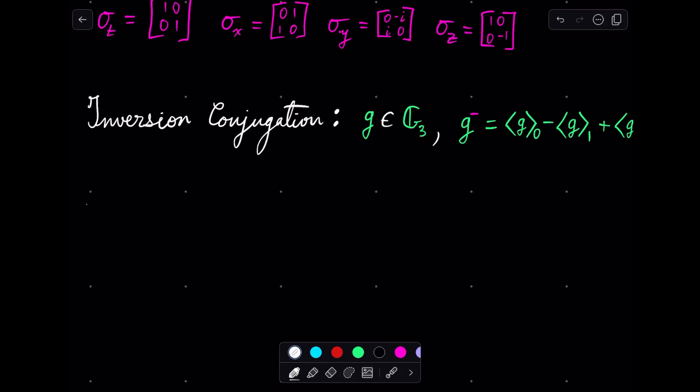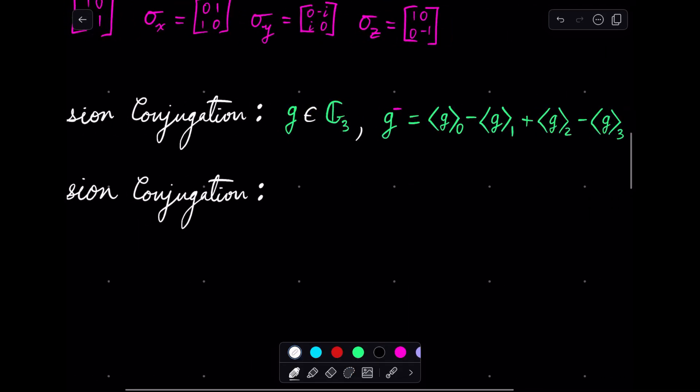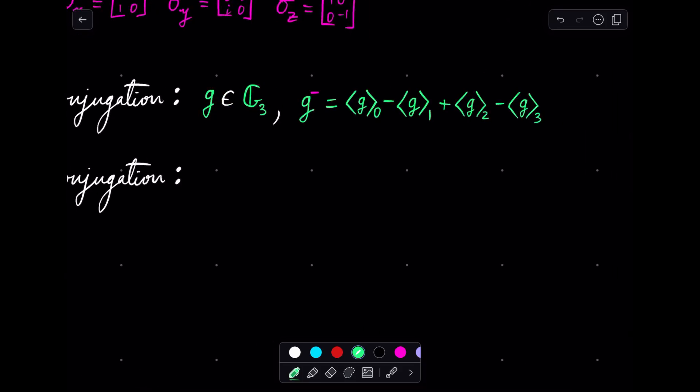And likewise, I will denote the reversion conjugation. For a g in G3, it'll be g with a little dagger up at the top right. And this just reverses the order of all products in the components. So it doesn't affect vectors. It does, however, affect bivectors and trivectors.